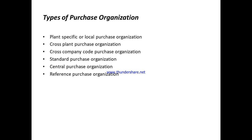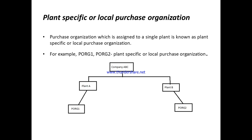The first type is plant specific or local purchase organization. Plant specific means if any purchase organization is assigned to one plant only, then that purchase organization is called plant specific. For example, PORG1 is assigned to plant A only, and PORG2 is assigned to plant B only. Because these purchase organizations are assigned to a single plant each, we call them plant specific or local.